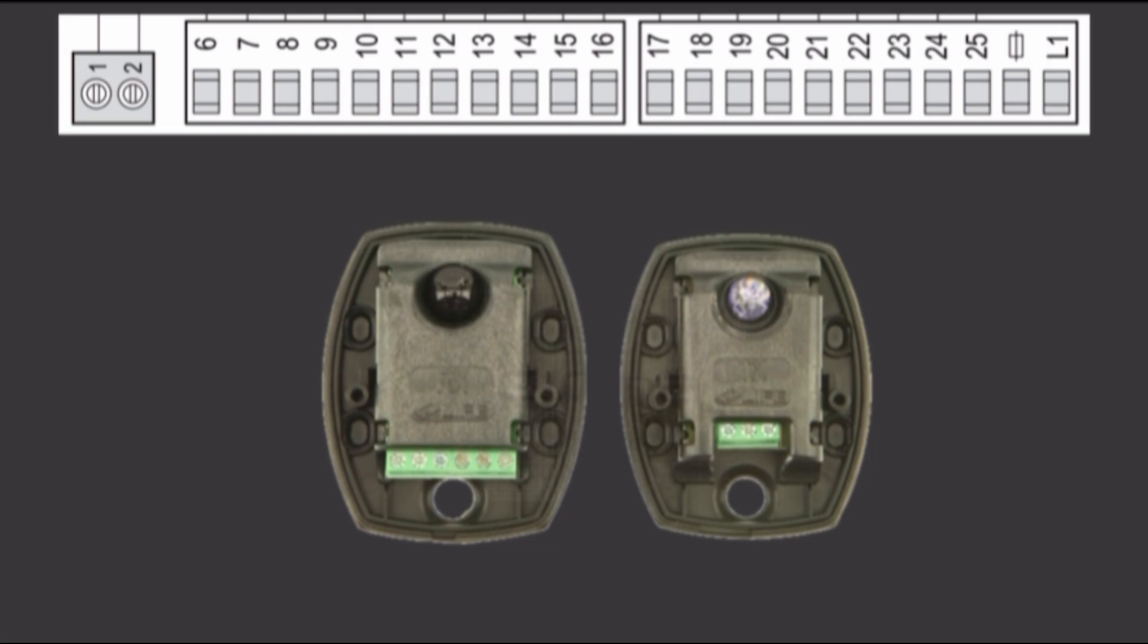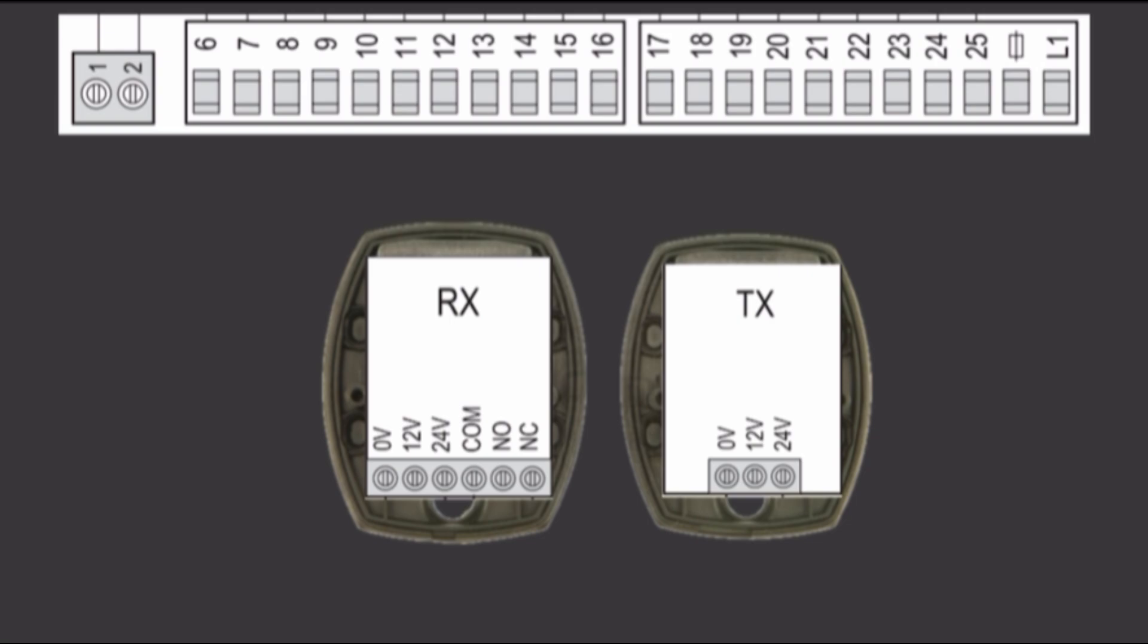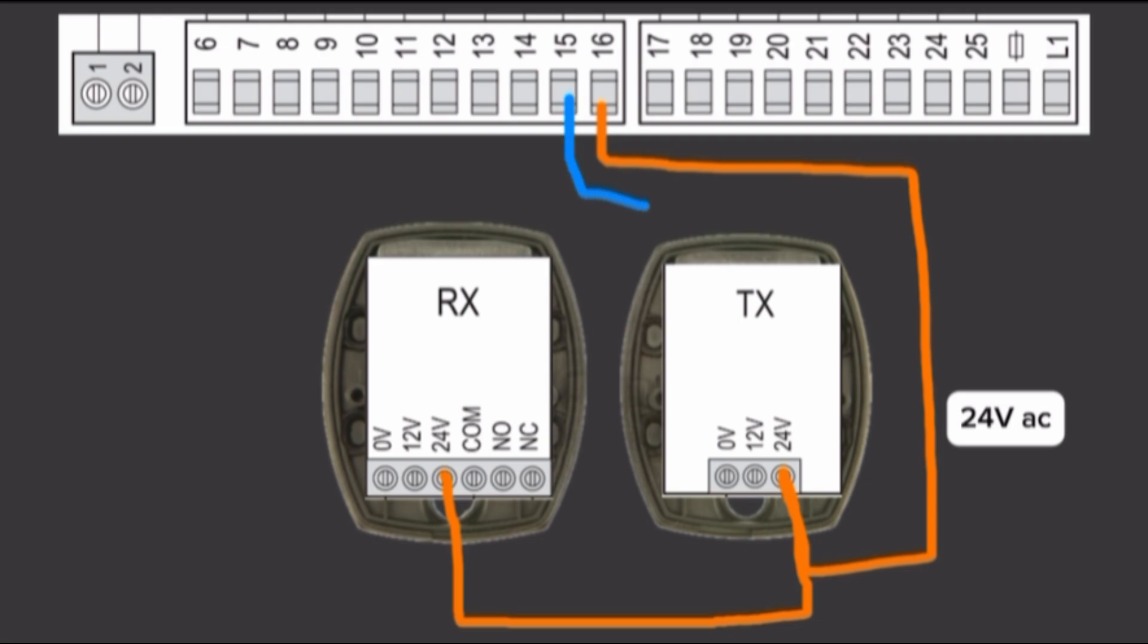This is Transmitter PhotoCell. First connect both PhotoCell power supply. Terminal 16 is 24V AC power supply. Connect this terminal to both sensors. Terminal 15 is 0V AC power supply.